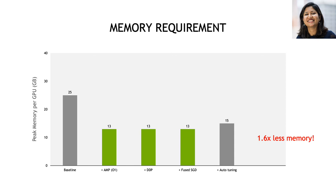The next thing I wanted to show was the improvement in memory utilization achieved by enabling all these optimizations. The baseline configuration used 25 GB of memory per GPU on the NVIDIA DGX node. By simply enabling AMP, I was able to reduce that to 13 GB, which was unaffected by using DDP or FusedSGD. However, enabling auto-tuning brought it up slightly to 15 GB, because the auto-tuning algorithm runs an optimization to find the best implementations for your training script. This is still a 1.6x reduction in memory consumption, enabling me to run on 16 GB NVIDIA DGX machines instead of 32 GB machines.